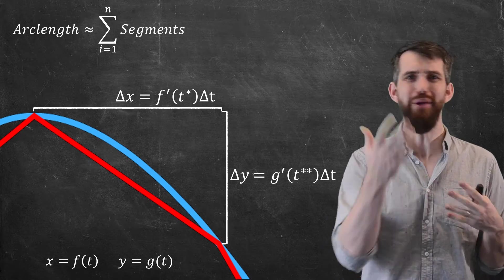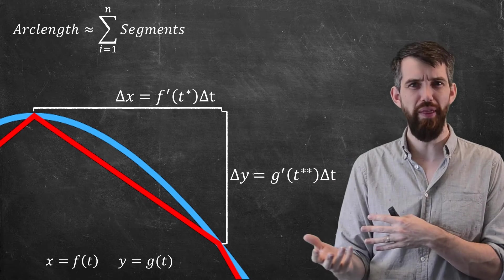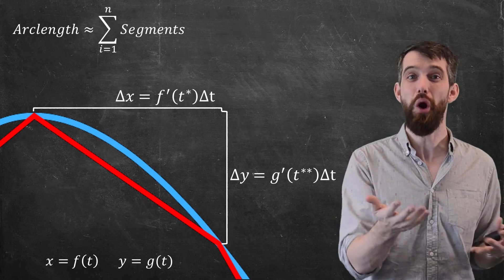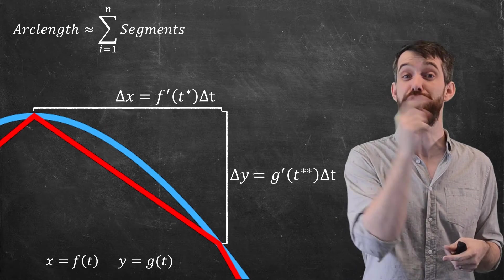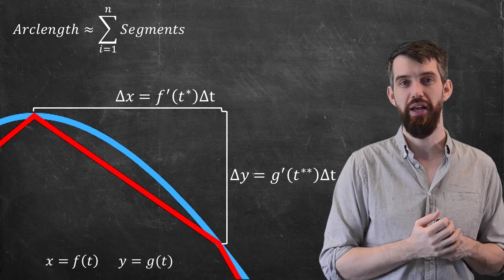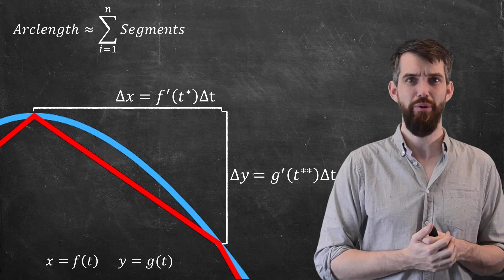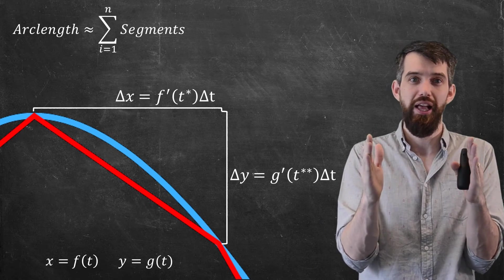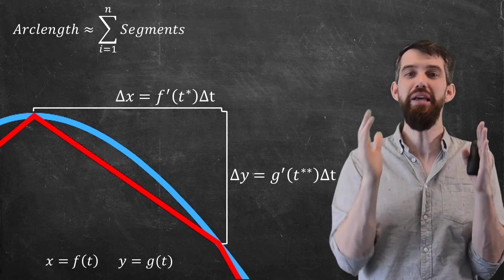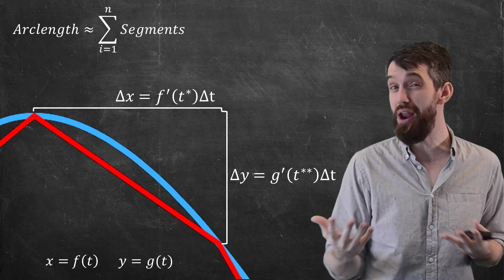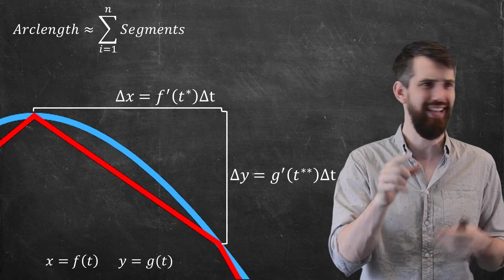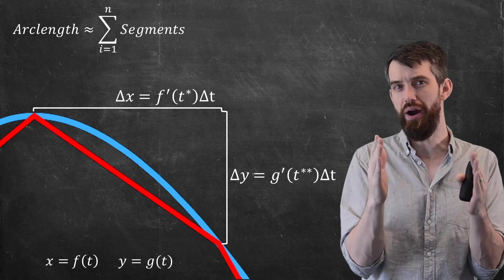Now, why do I have a t star and a t double star in there? The reason is the same reason we had a star back when we did arc length the very first time earlier on in the semester. And basically what we're doing is we're doing a mean value theorem here. And what we're saying is that in this little region, there is some spot in the middle of that region. I don't know exactly where, so that's why I put the star there. The star says it's somewhere in there, but I don't know where.